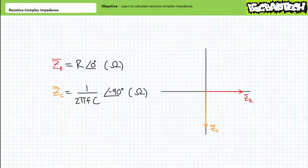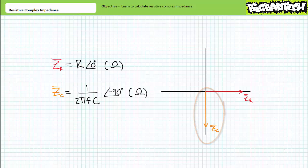Capacitors, in contrast, when represented as complex impedances, are elements that exist entirely in the negative vertical imaginary y-axis. Frequency of the AC source does have an effect on the magnitude of capacitive impedance. Z of C (note the overbar) equals 1 over 2π times the frequency in hertz, times the capacitance in farads, at an angle of negative 90 degrees when represented using polar format. When depicted in the impedance domain, capacitors exist solely in the negative imaginary vertical y-axis, proportional to 1 over 2πfc. We'll examine capacitive complex impedance in an upcoming lecture.